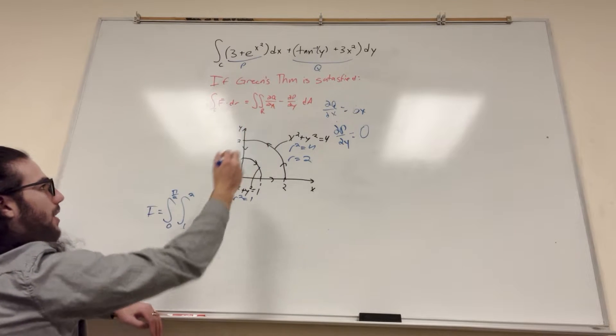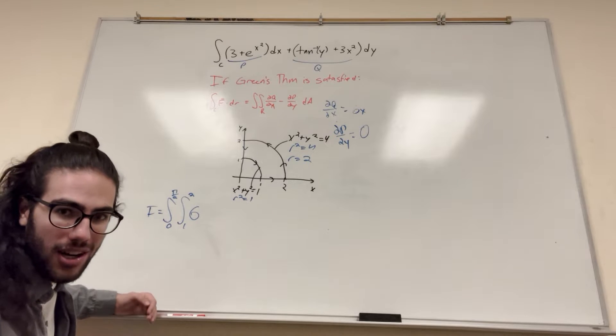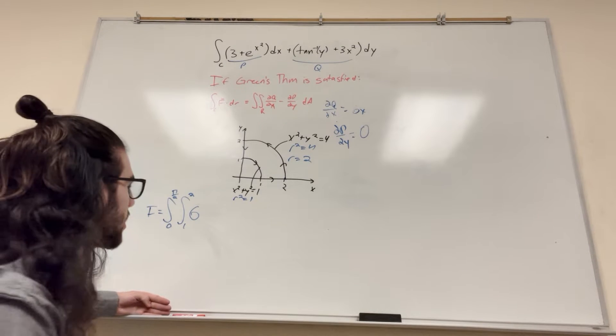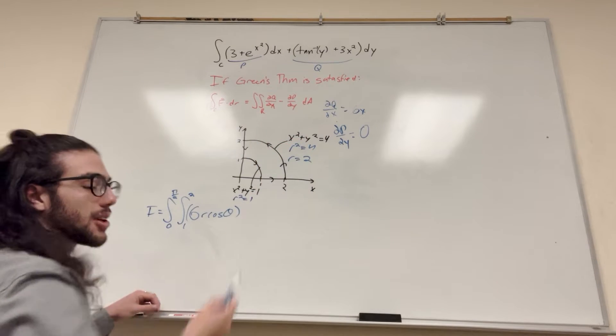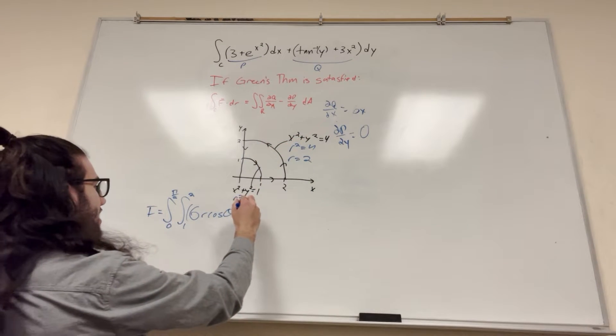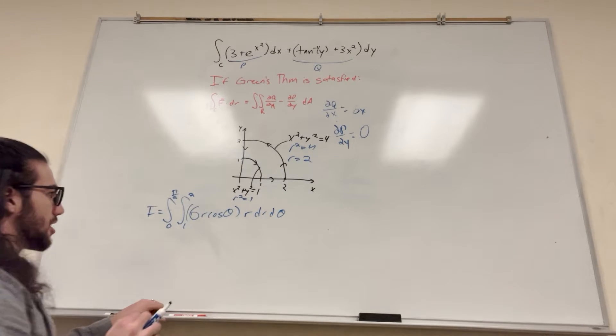Alright, so let's plug in what we got. So it's going to be 6x, but we have x is equal to r cosine theta, because we're using polar. So r cosine theta. And it's going to be subtracted by 0, so we don't have to worry about that. Perfect. So then of course we have to put in our r dr d theta when we put in our polar. So perfect. This is a pretty easy integral.